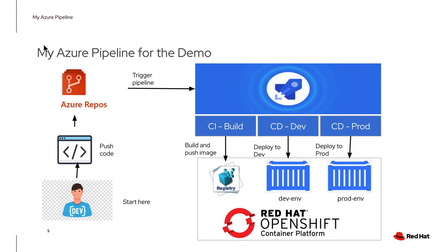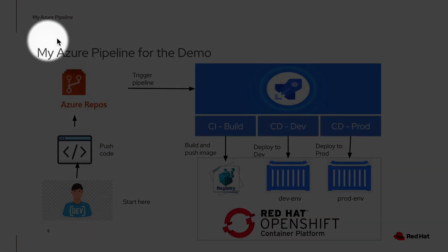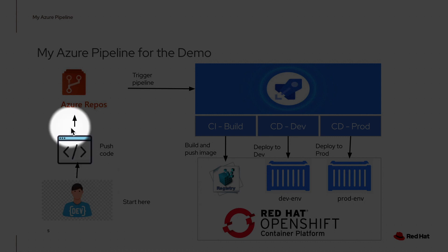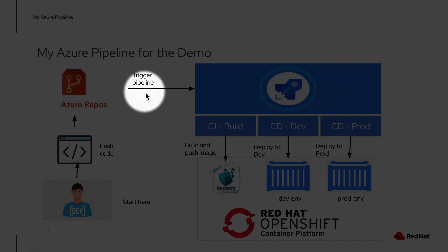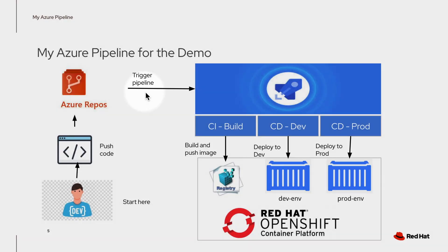Here is a pictorial representation of how my Azure pipeline works. You have a developer working on the code, pushing all the changes to Azure Repo, which is our source control system. Changes in the repo trigger the pipeline. By the way, there are two different versions of Azure pipeline: YAML pipeline and the classic pipeline. I'm using the newer YAML pipeline, which is the recommended pipeline to use by Microsoft.